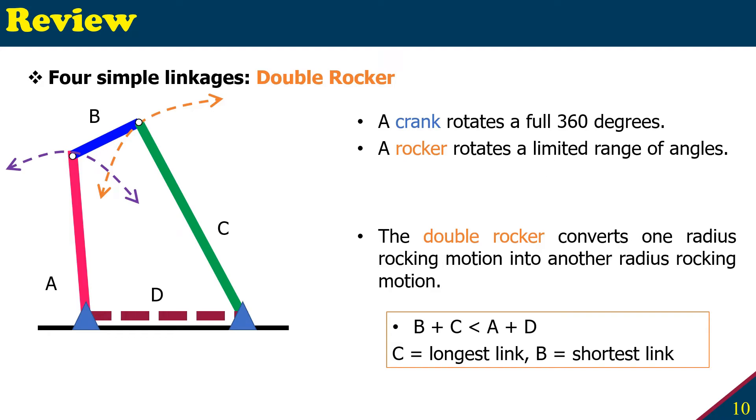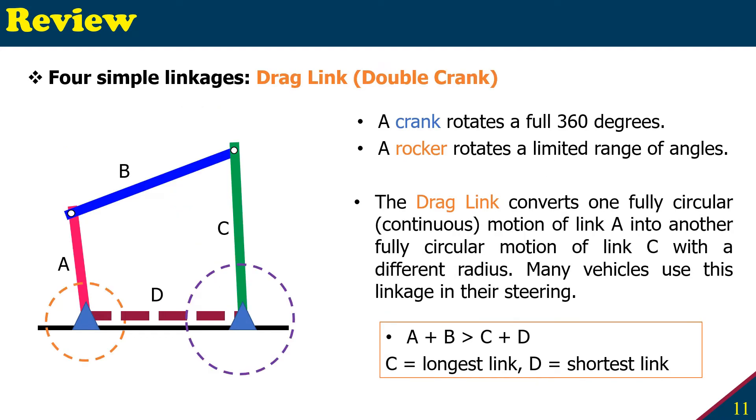So we've finished two. Let's move to our third type of four bar linkage, which we can call drag link or double crank, meaning input and output can have a crank 360 degree rotation.